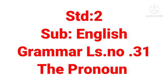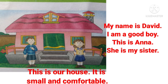Standard second subject English grammar lesson number 31: the pronoun. Children, look at this picture. My name is David. I am a good boy. This is Anna. She is my sister. This is our house. It is small and comfortable.